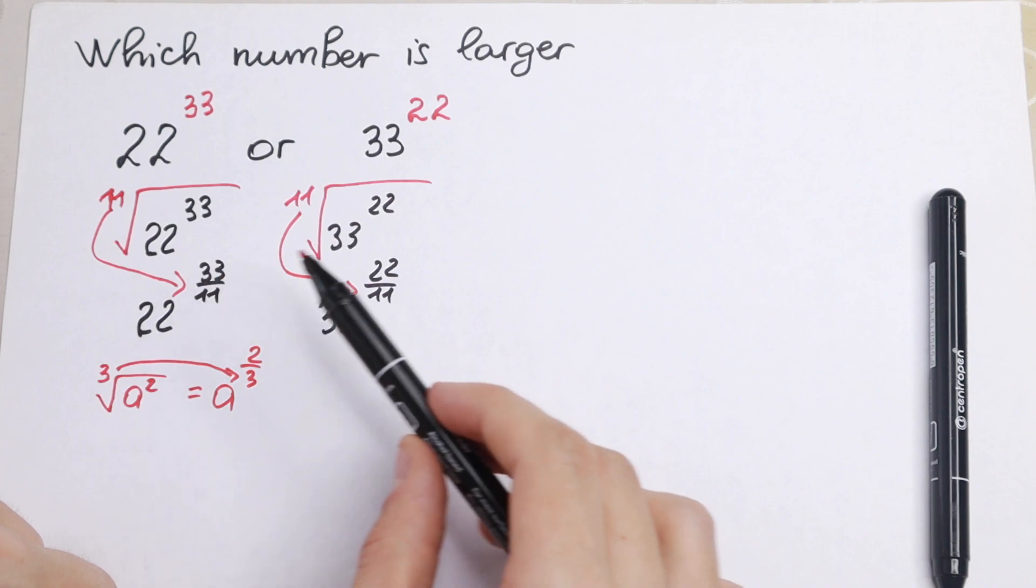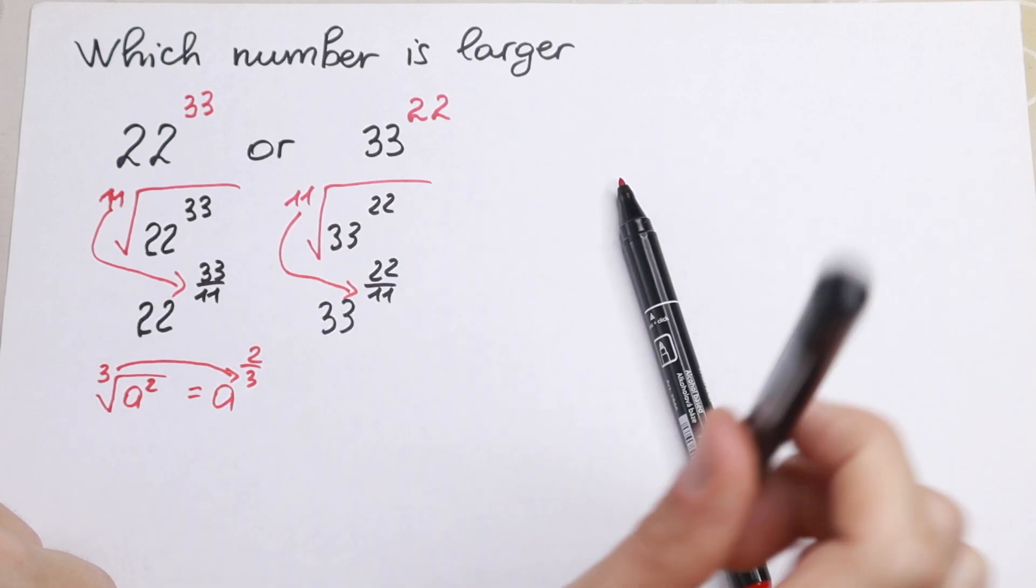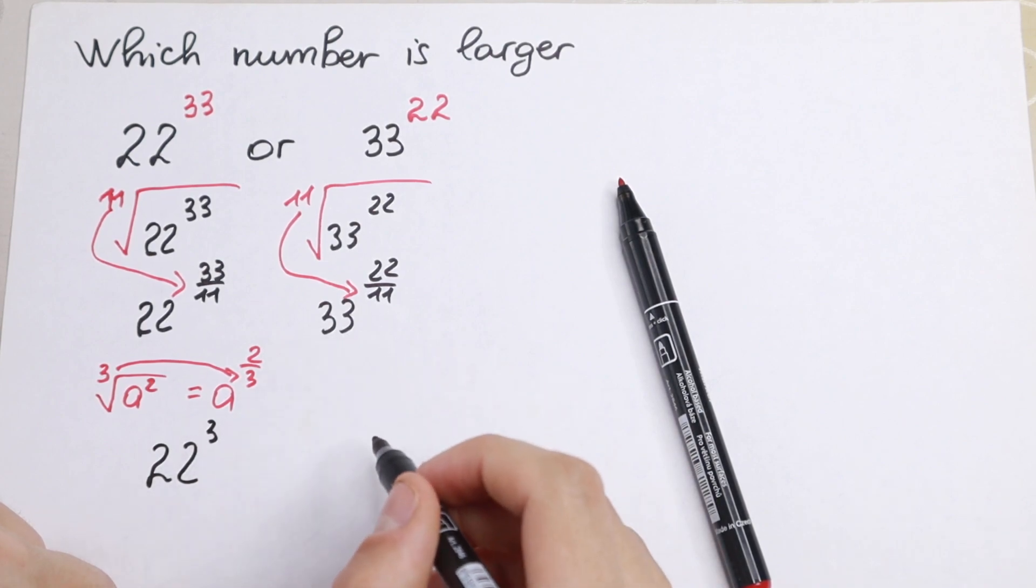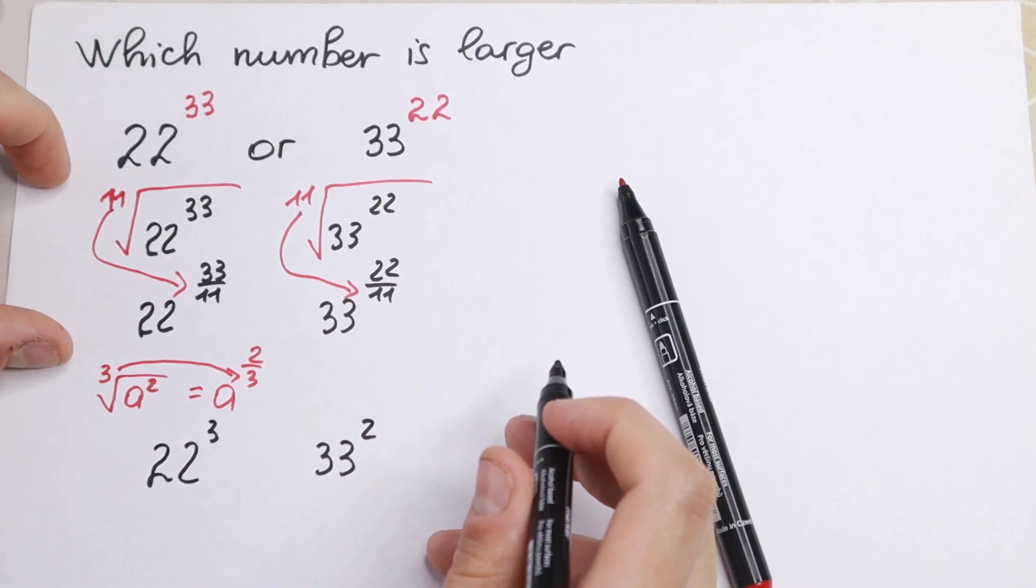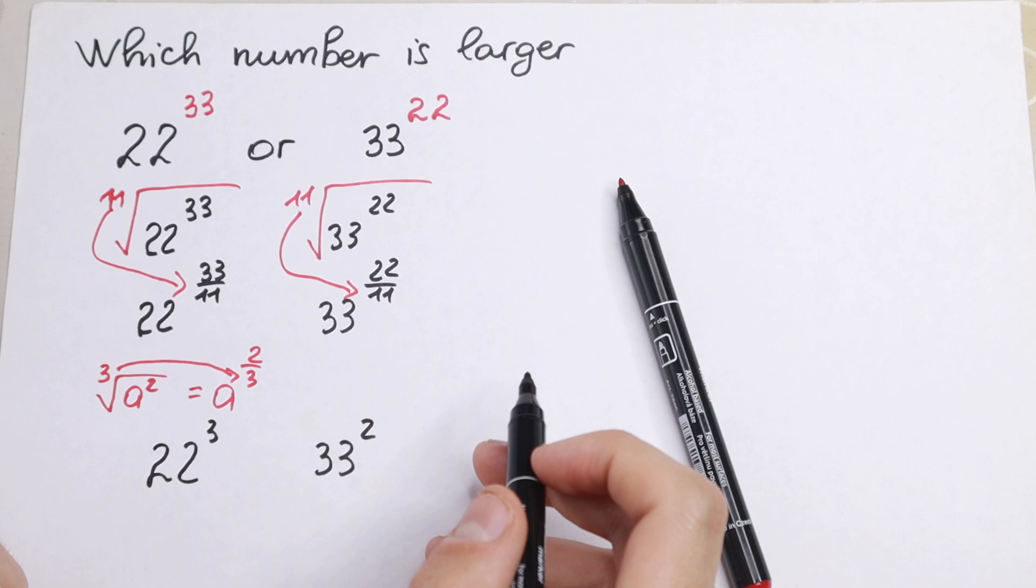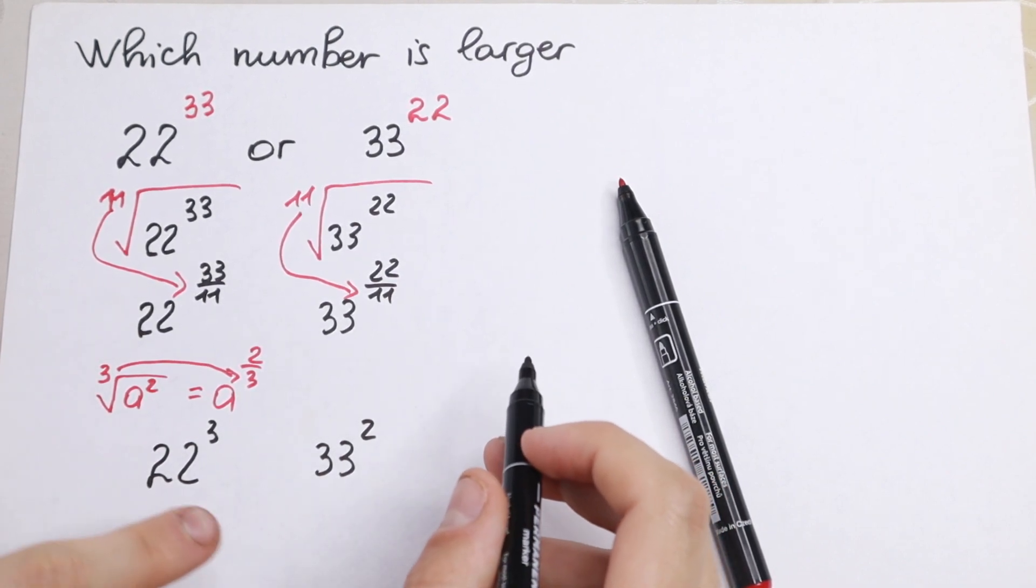If we divide 33 by 11 we will have 3. So take a look what we will have: 22 to the third power and on the right hand side we will have 33 squared. As you can see after this simple step we just get 22 cubed and 33 squared. So we need to compare these two numbers.